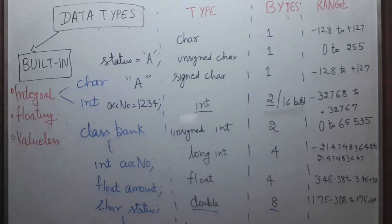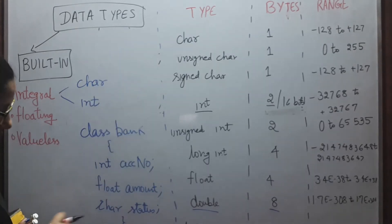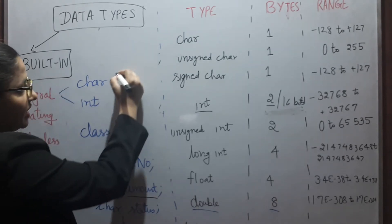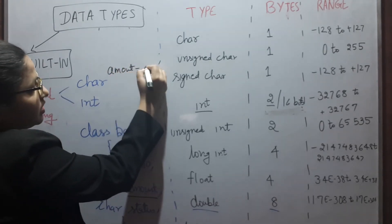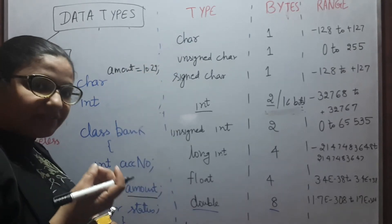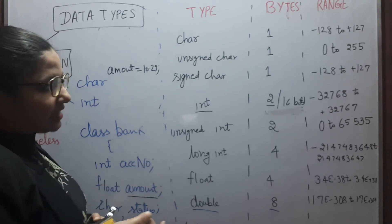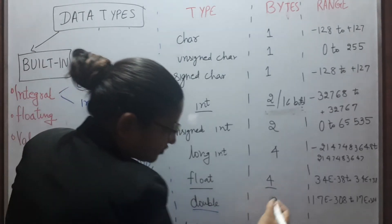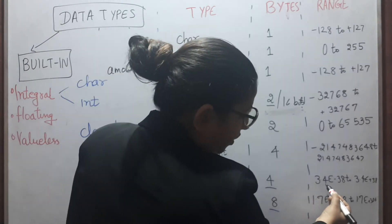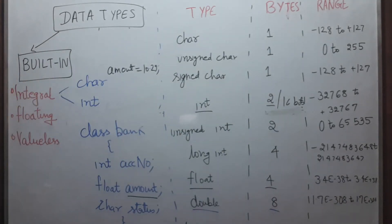Next, we are having floating point value. As we can see, if we want to store amount, amount can be amount equals to 10.29. That means, you have decimal values. So decimal values, you require floating point data types. Float takes four bytes of memory and its range is 3.4e-38 to 3.4e+38.